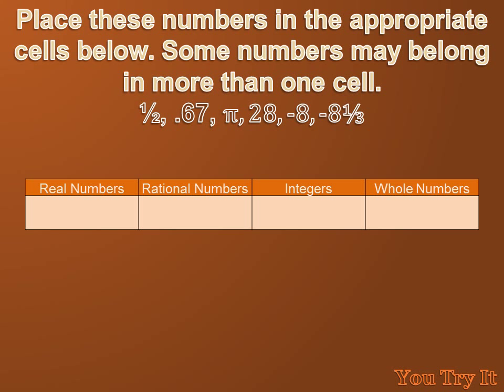Place these numbers in the appropriate cells below. Some numbers may belong in more than one cell. Classify these numbers as either real numbers, rational numbers, integers, or whole numbers. Some of these will belong in more than one category. Hit your pause button, try the problem, and then move forward to my answer.